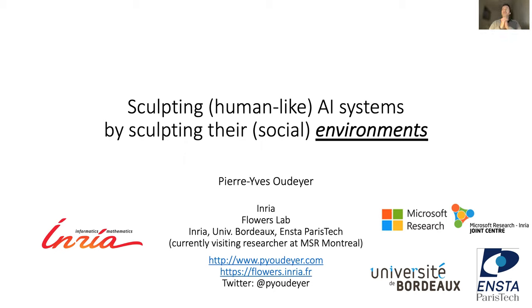Today I'm going to discuss the role of environments in the development of artificial intelligence systems. In particular, I would like to propose that maybe if we want to sculpt human-like AI systems, we should first focus on sculpting their environments, and in particular their social environments.